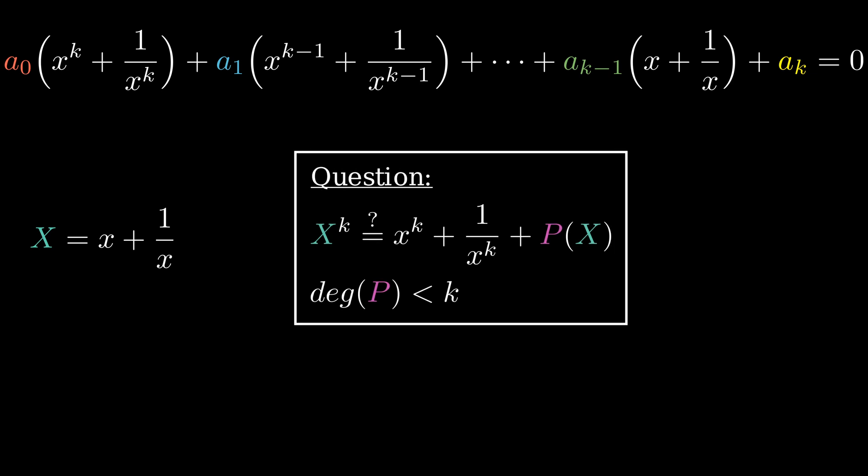Now comes the question. Can we always write big X to the kth power as x to the k plus 1 over x to the k plus some polynomial in big X, where the degree of that polynomial is smaller than k?